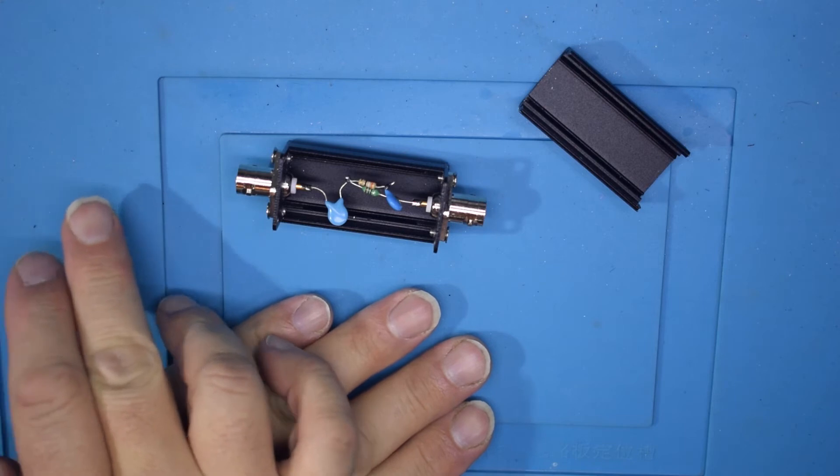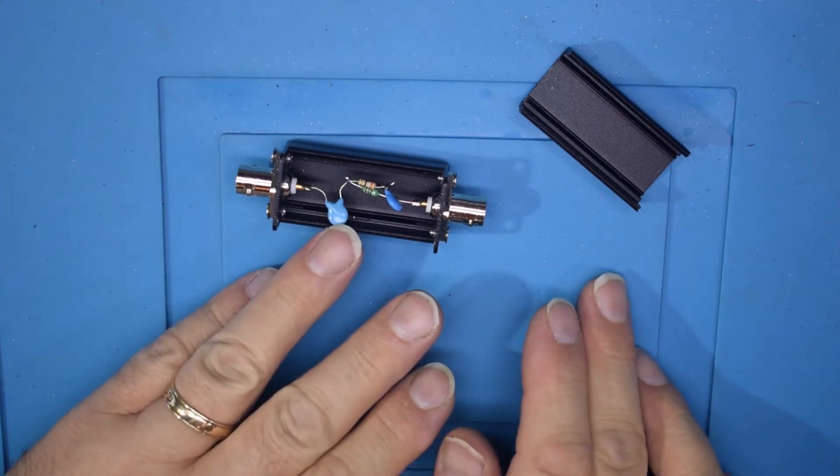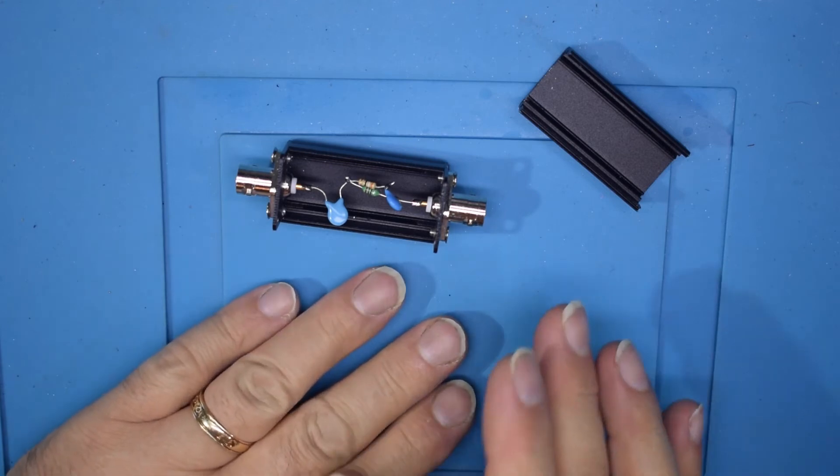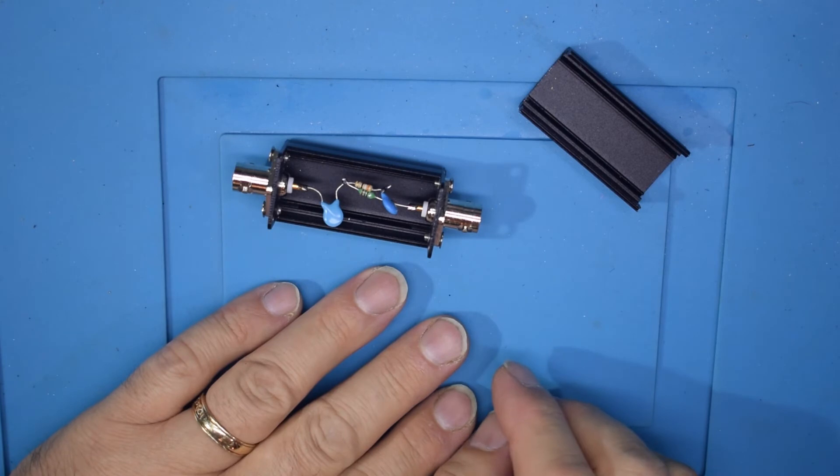It allows the AC RF to come straight through it, but blocks any DC coming either way so that you don't get any dangerous voltages up to the signal generator.